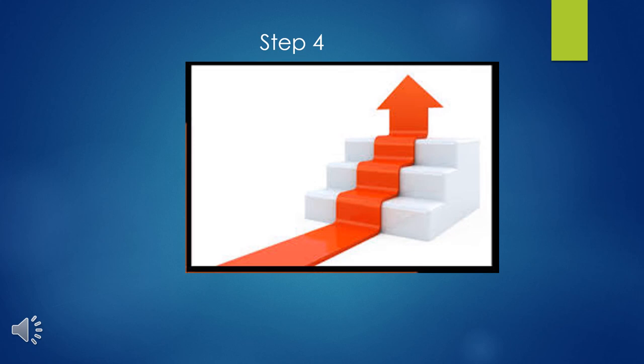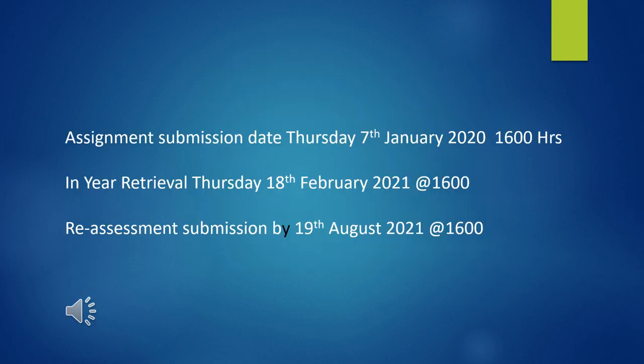The next step is to work out how long you have to do this. You'll need to submit electronically by the 7th of January at 4 p.m. If you fail, we have an in-year retrieval scheme which means it's almost a free attempt a few weeks later.